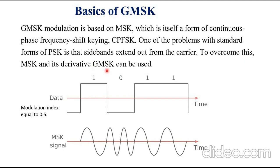MSK and also GMSK modulation are what is known as a continuous phase scheme. There are no phase discontinuities because the frequency changes occur at the carrier zero crossing points. This arises as a result of the unique factor of MSK — that the frequency difference between the logical one and logical zero states is always equal to half the data rate.